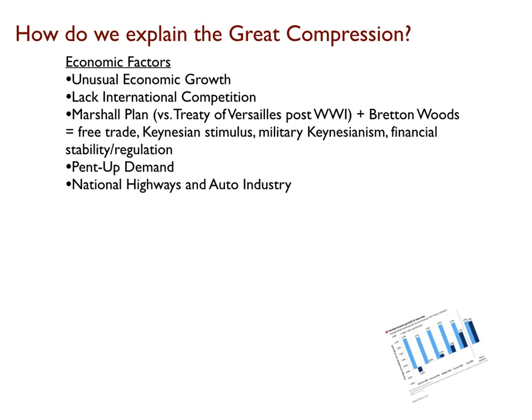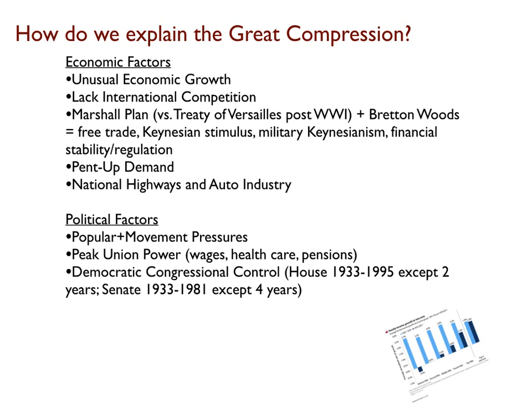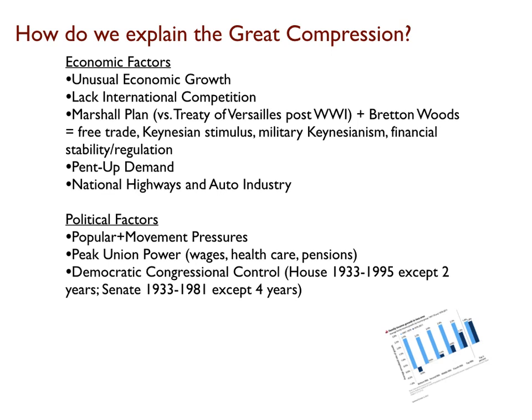But what about the distributional piece — why did so many people reap the benefits of that growth? If economics explains growth, it's politics that has to explain distribution. The U.S. working class has perhaps never been more powerful than in the 1940s, thanks to historically high rates of unionization, continued mass movement pressures pushing the political system to respond, the continued expansion of the national welfare state erected in the 1930s, and especially the GI Bill, which offered free education, healthcare, and cheap homes — arguably creating something of a Swedish welfare state for veterans. All of that was made possible by very high tax rates on wealthy individuals and corporations, which funded the expansion of the white middle class and even the beginnings of a black middle class.